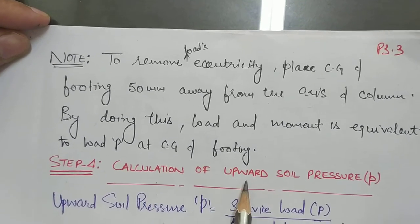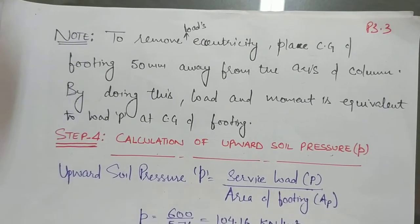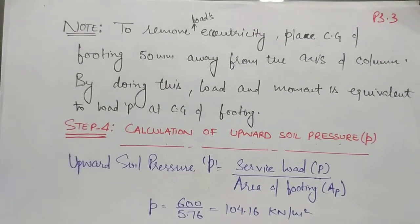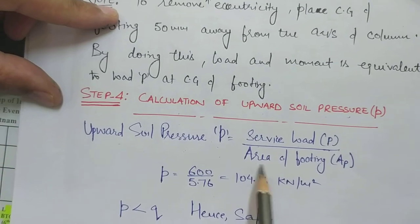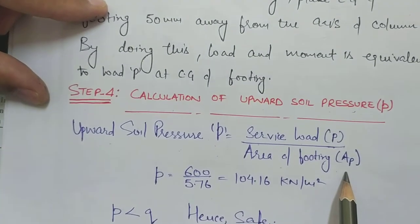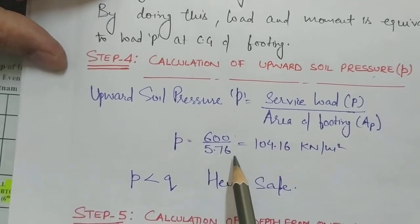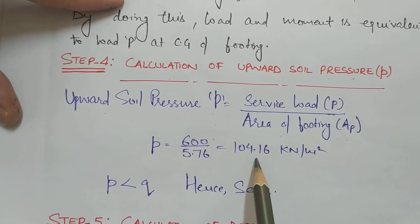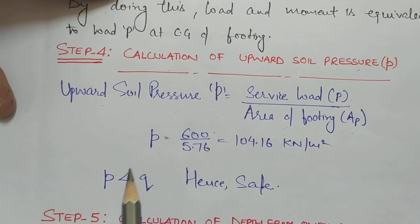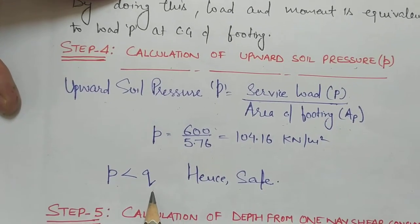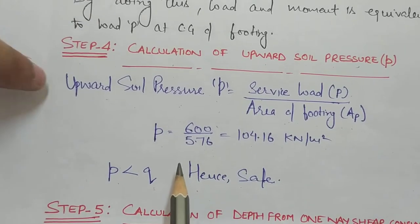Step four is the calculation of upward soil pressure, which is the resistance provided by the soil in the upward direction. Upward soil pressure p = service load / area of footing provided = 600 / 5.76 = 104.16 kilo Newton per square meter. Note: the value of p must be less than the safe bearing capacity q = 120 kN/m², which is satisfied.